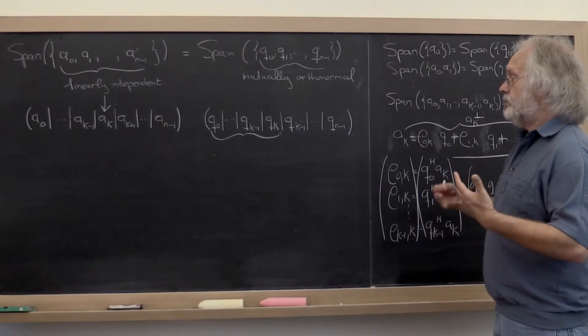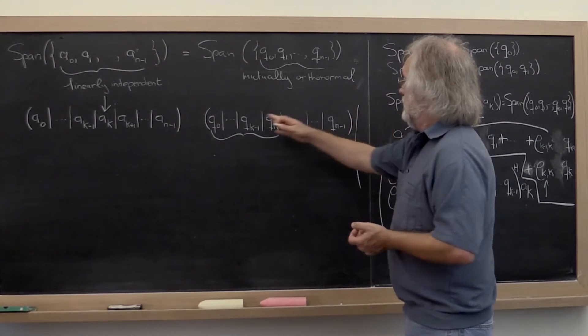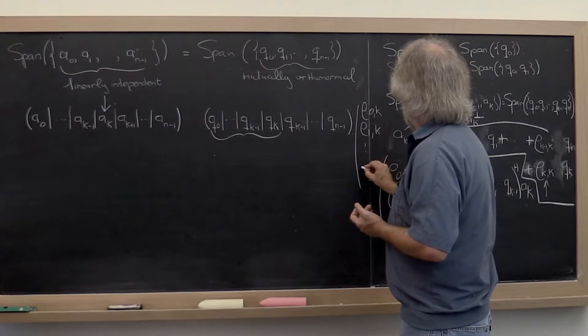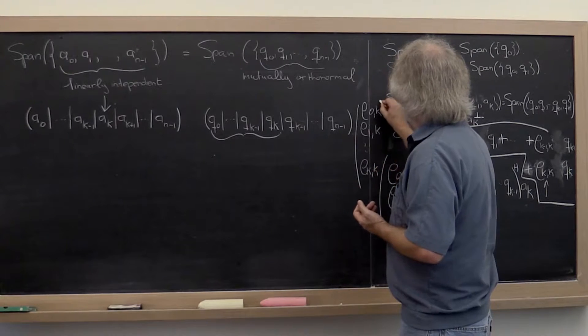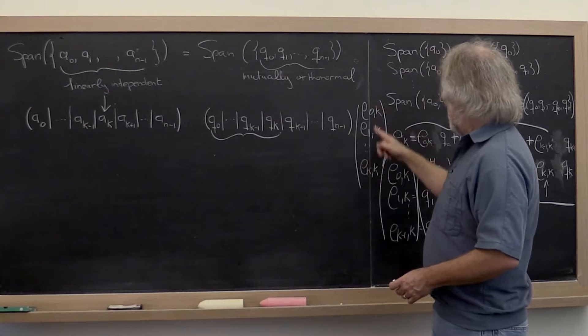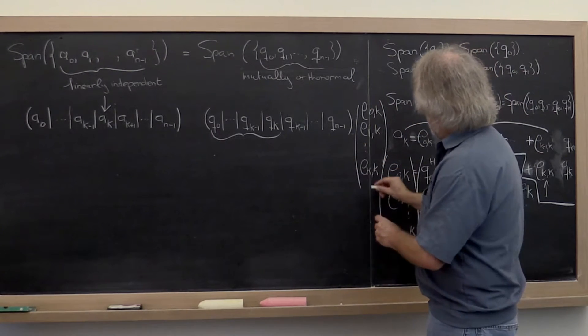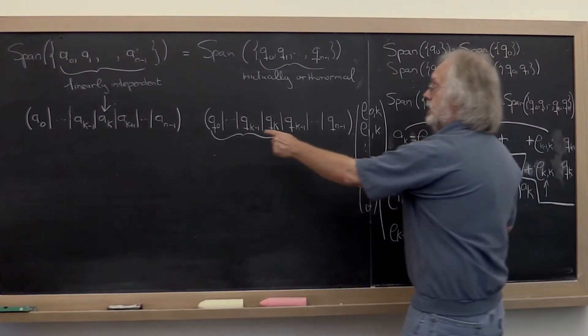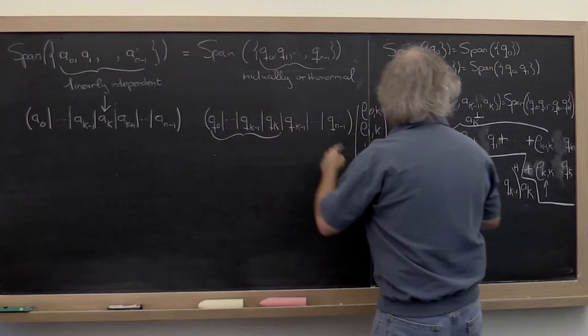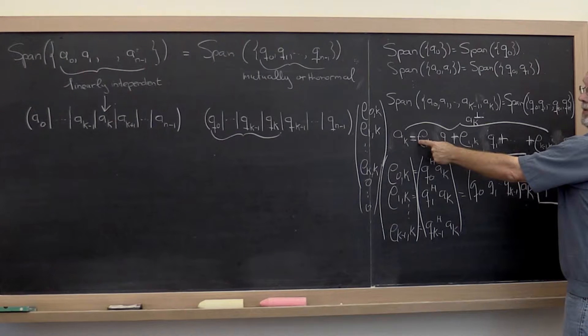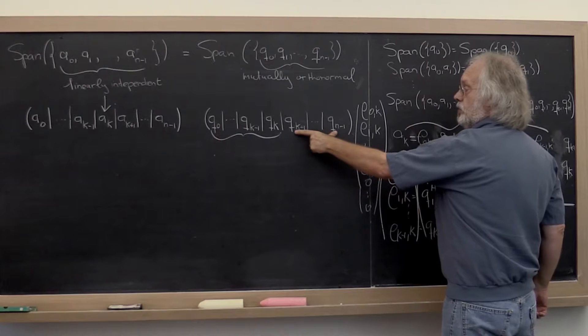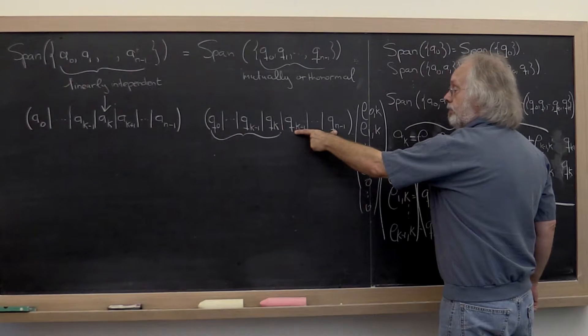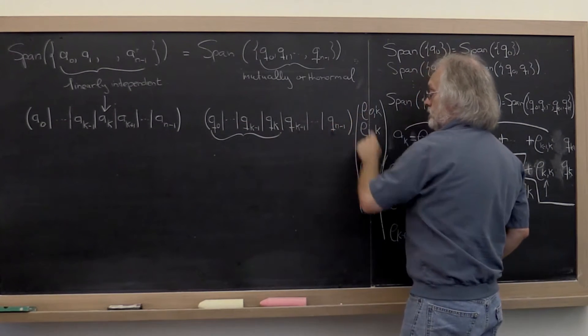And we can write that as a matrix vector multiply by saying, this is this matrix times rho_{0,k}, rho_{1,k}, and so forth, all the way up to rho_{k,k}. If you multiply this matrix times that, the size doesn't fit. So we need to place a bunch of zeros at the end here. And notice that if you do this times this plus this times this and so forth, then you get exactly the right-hand side of this. And then if you place zeros for the rest, then you don't take linear combinations of the remaining vectors q_{k+1} through n-1. And therefore we have established this equality now expressed as this matrix vector multiply.